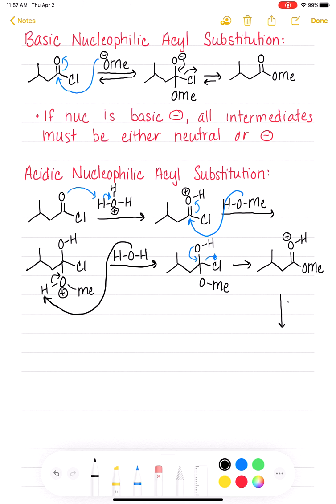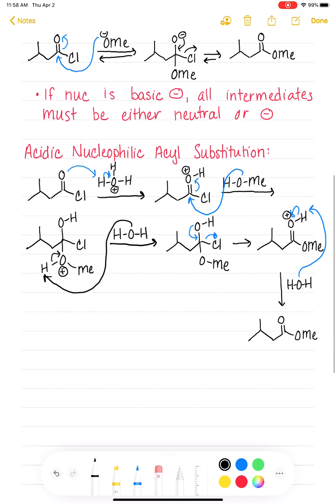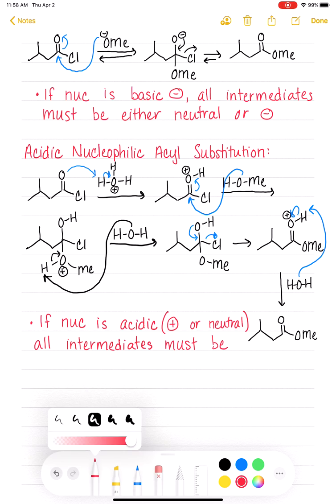So we're going to use something else. We could use water again if we wanted. It doesn't really matter what we're using to do these deprotonations with. And we're finally done. As you can see, this is a much more tedious mechanism than the basic mechanism. So we're going to make another general statement. If our nucleophile is acidic, and this means that it's either going to be a positive charge or it'll be neutral, one or the other, all intermediates in this reaction must be either neutral or positively charged.